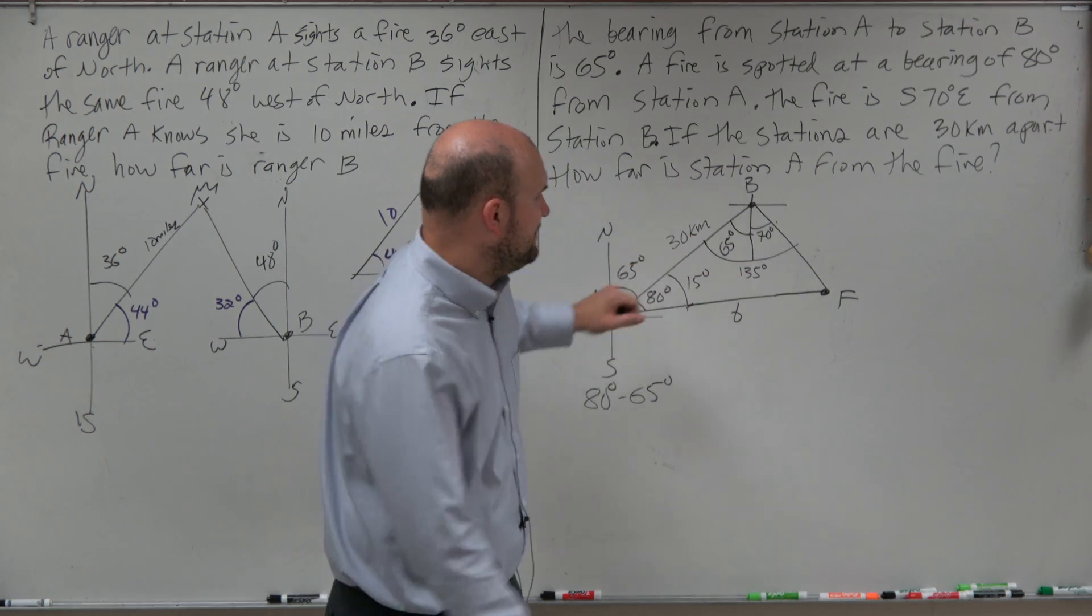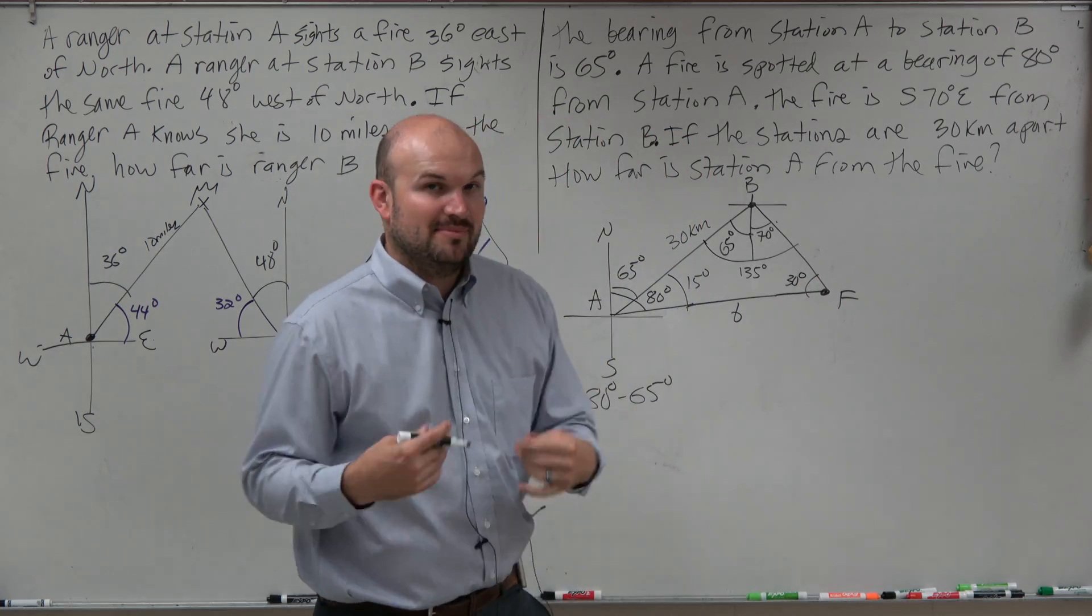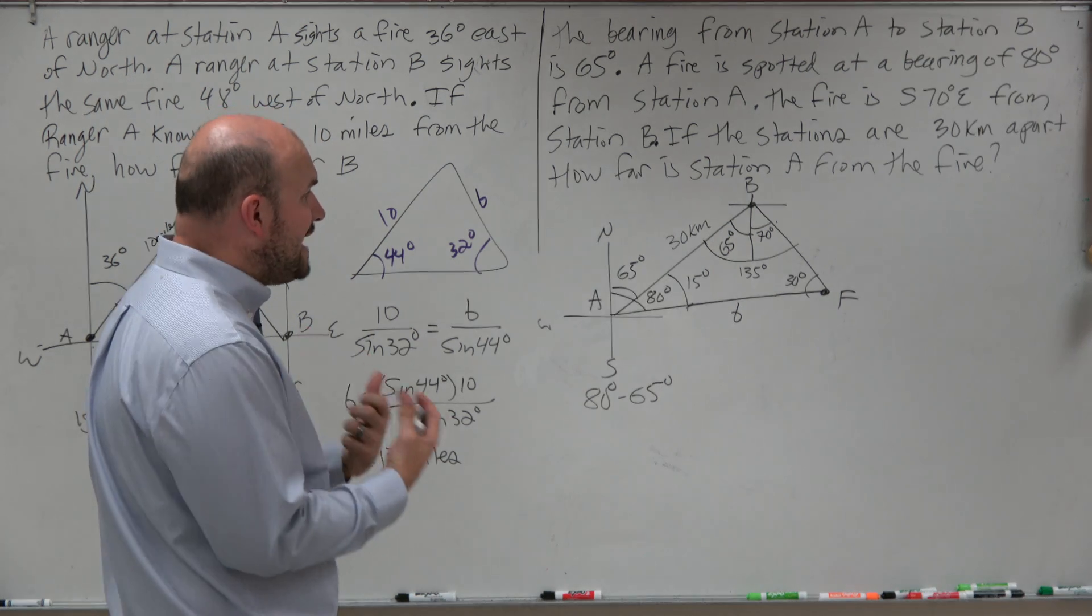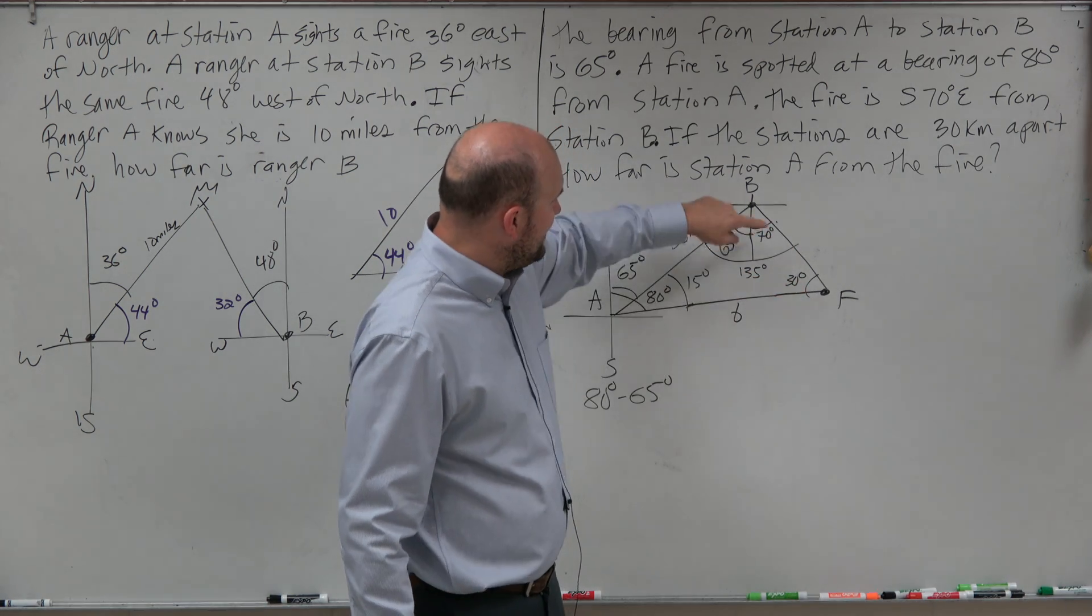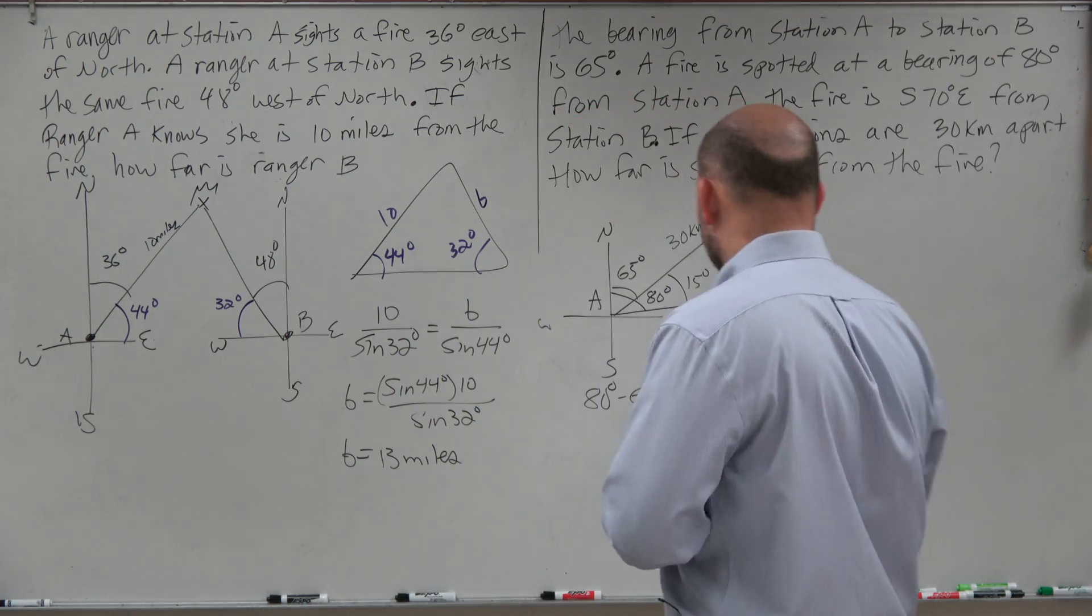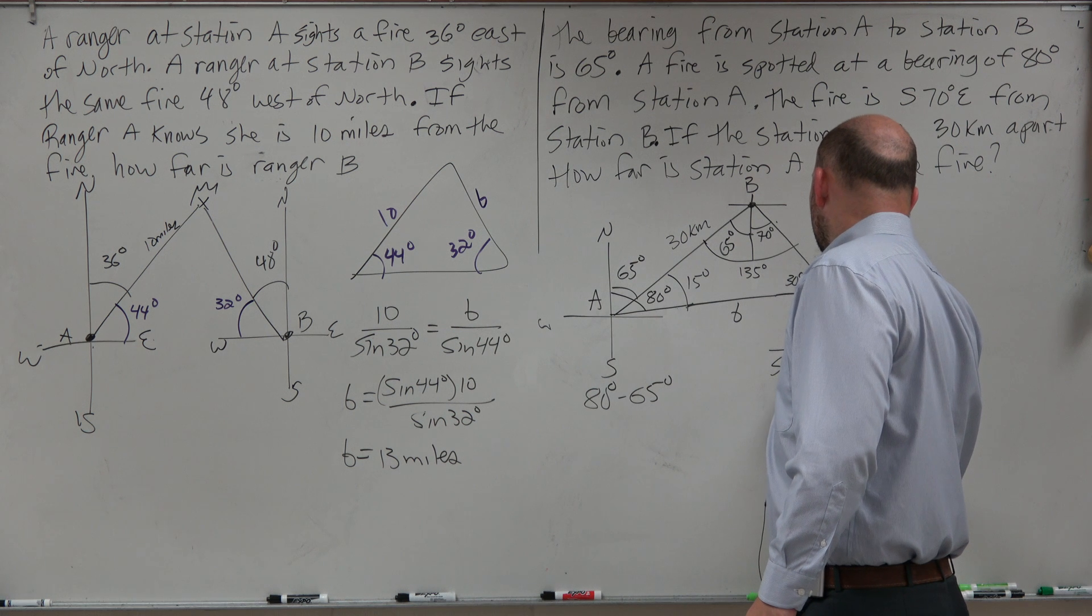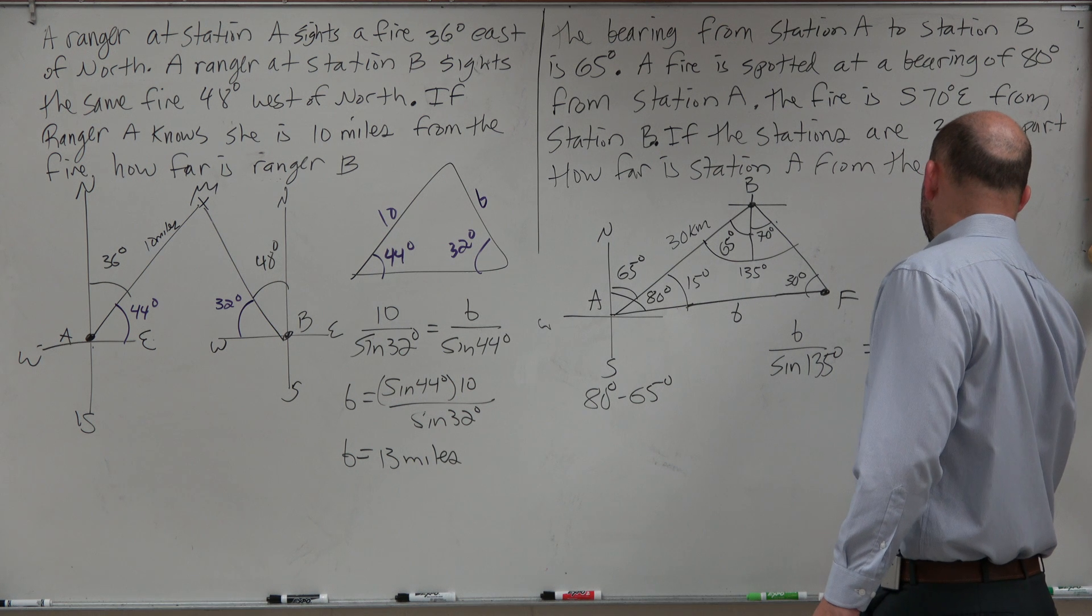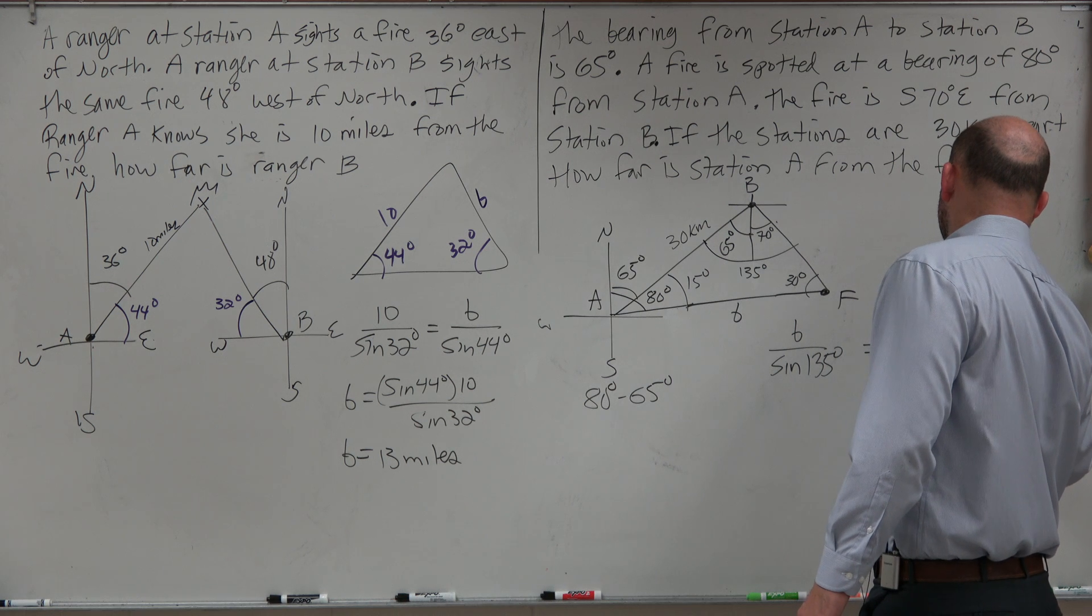Therefore, if I have 65 degrees and 70 degrees, that means this angle is 135 degrees. So now, if I know that's 15 degrees, that's 135 degrees, that means this angle has to be 30 degrees, because all the angles in the triangle have to add up to 180. Now, ladies and gentlemen, I have enough information. I have this side length and this angle, and I have this angle and this side length. So now I can use my law of signs to create a proportion that I can solve.